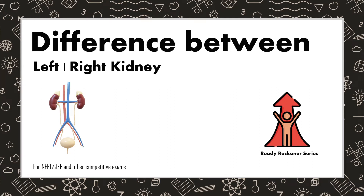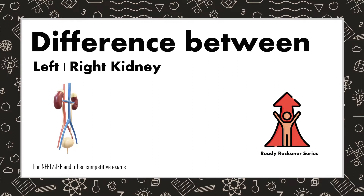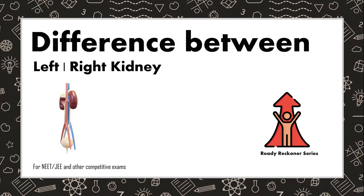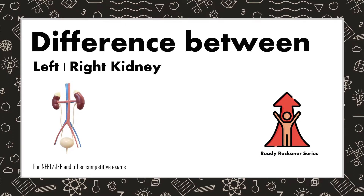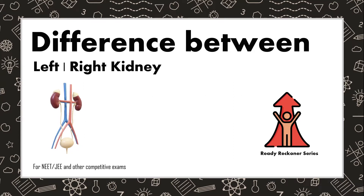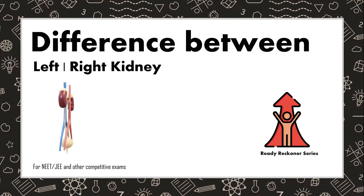In this video, let's understand the difference between the right kidney and the left kidney. Kidneys are present on either side of the vertebral column. Each kidney has a number of functional units known as nephrons. The left and right kidneys differ in their size and position.